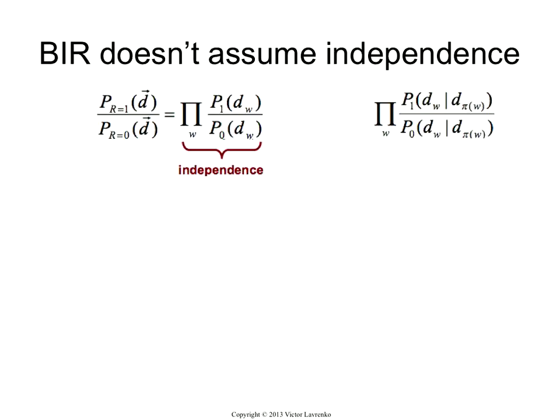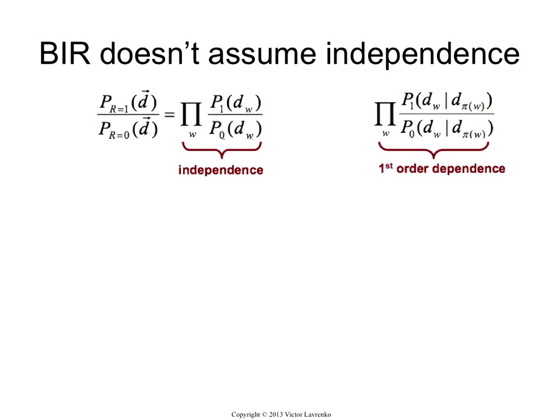What would happen if we didn't assume independence? What happens in the first-order dependence model? In a first-order dependence model, this equation becomes that. So instead of having the probabilities for each word in isolation, you now have the probability for the word conditioned on its parent word, whatever that word happens to be. And you do that for the relevant class, P1, and the non-relevant class, P0.